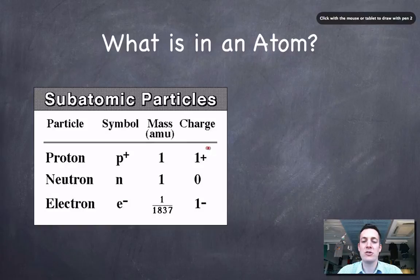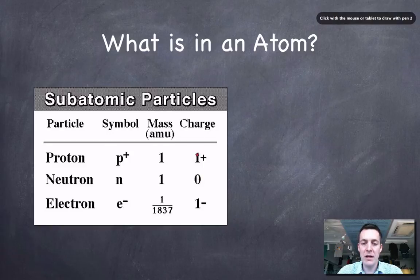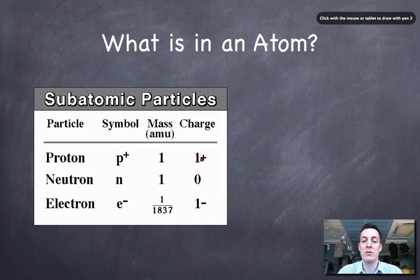The proton has a charge of plus one and the electron a charge of minus one. That means that the proton and electron have exactly the same amount of charge, but they're precisely opposite to one another.